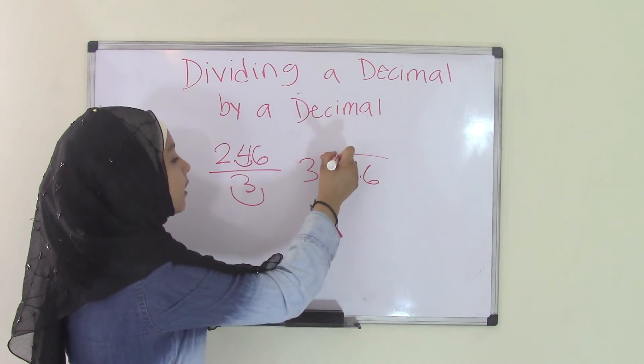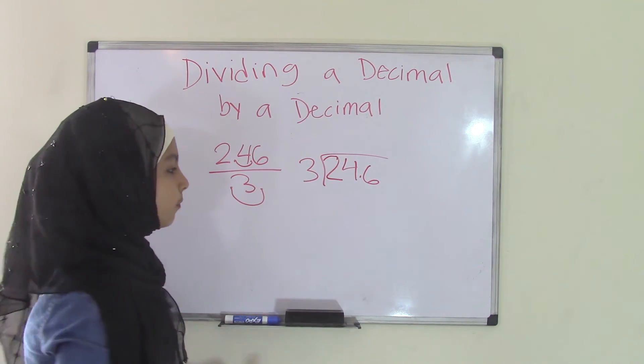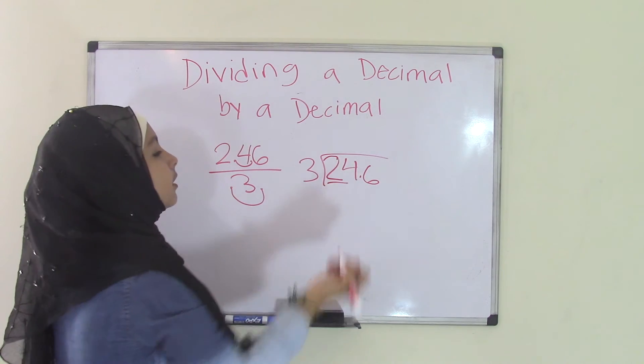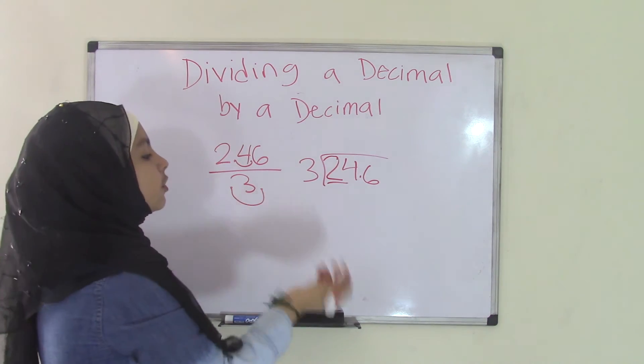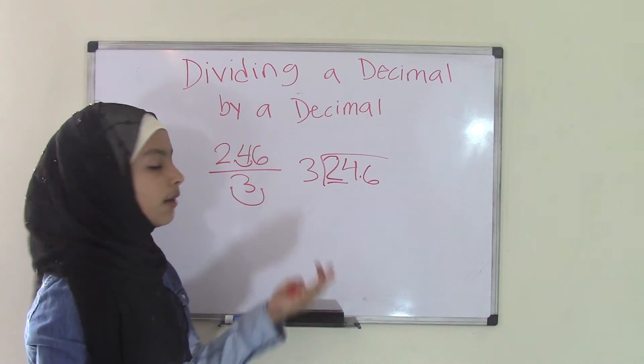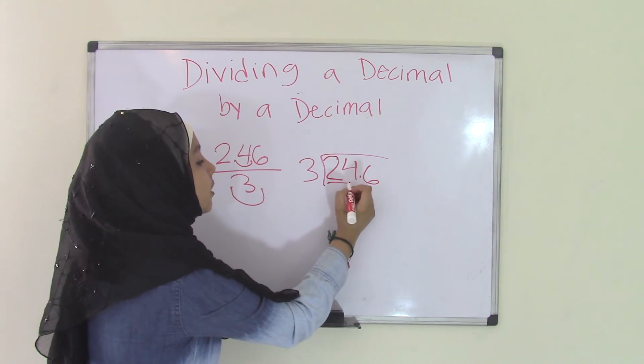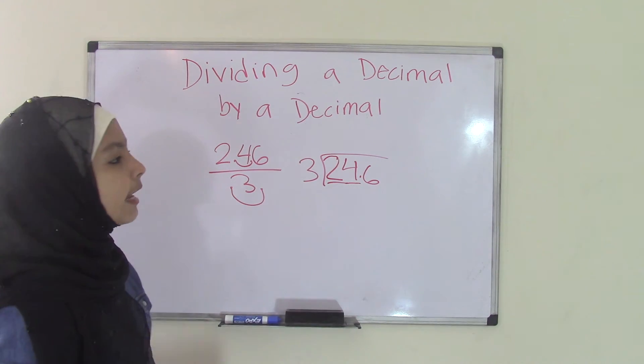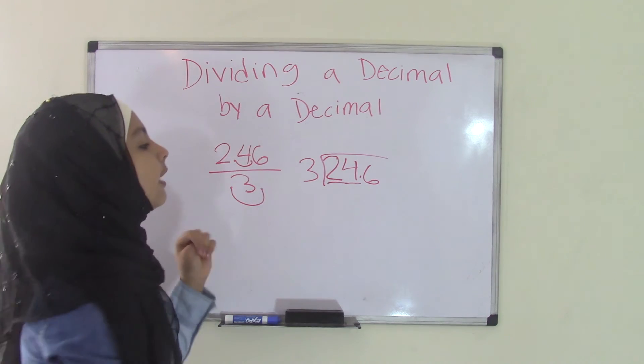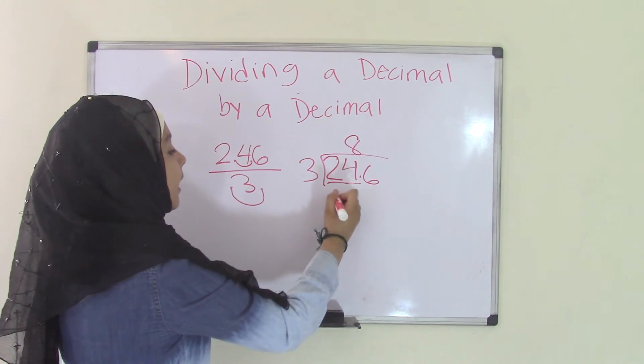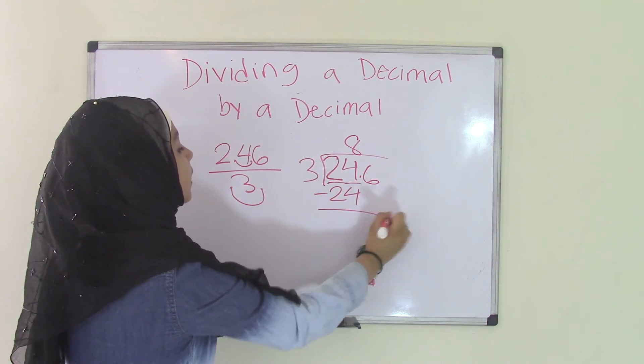So as you were doing like a normal division problem, look at the first number, the first digit, which is 2. You cannot divide 2 divided by 3, right? So what you're going to do is combine the next digit. So that becomes a 24. How many times does 3 go into 24? 8 times, right? So 8. And then we do the subtraction. So we get 0.